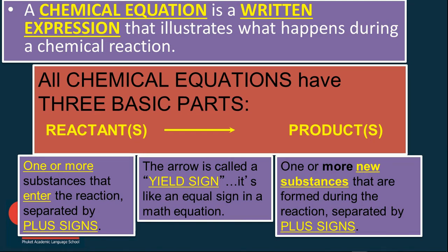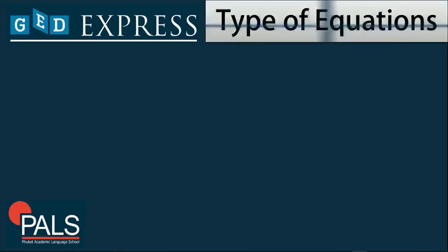For the product side, the one on your right, that would be one or more new substances that are formed during the reaction, separated by plus signs.